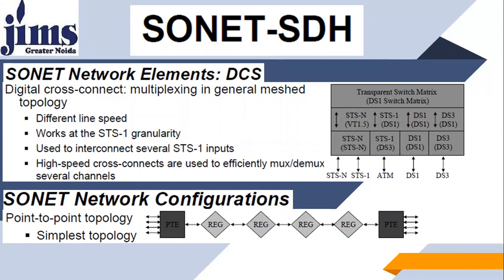The SONET network element DCS — Digital Cross-Connect — handles multiplexing in general mesh topologies. Different line speeds work at STS-1 granularity, used to switch several STS-1 inputs. High-speed cross-connects are used to efficiently multiplex and demultiplex several channels. The first SONET network configuration is point-to-point topology — the simplest topology used in SONET. This picture shows how point-to-point terminal works, using many regenerators between transmitting and receiving ends.